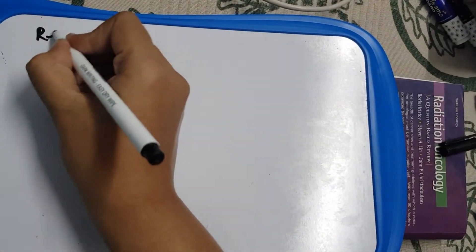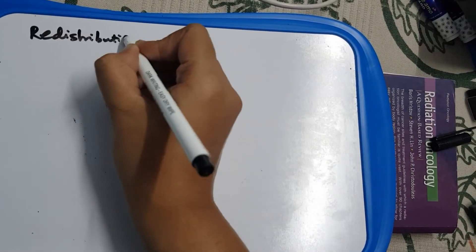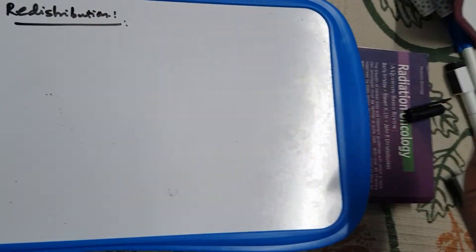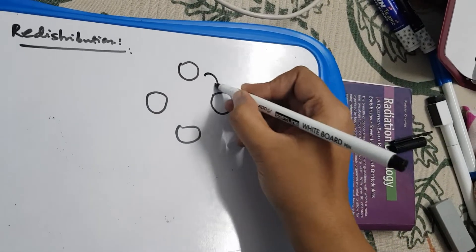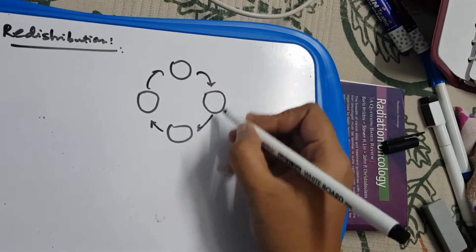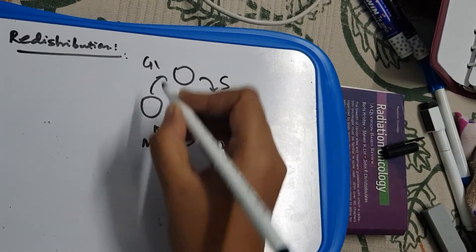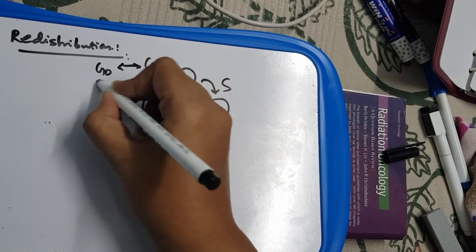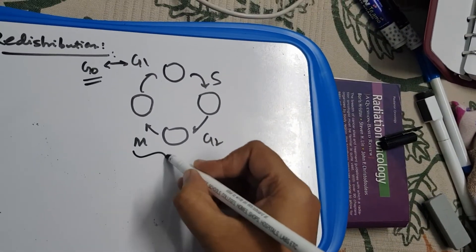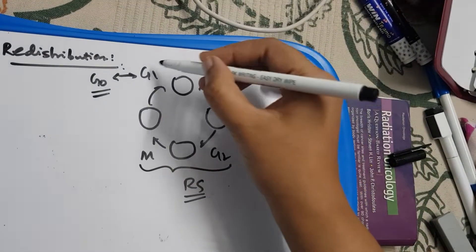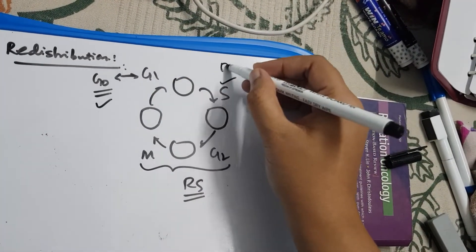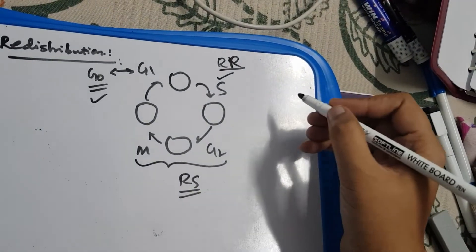Next is redistribution. We know that the cell cycle has G1, S, G2, and M phases, with G0 for normal cells. G2 and M phase are radiosensitive parts of the cell cycle, whereas S and G0 are radio-resistant.